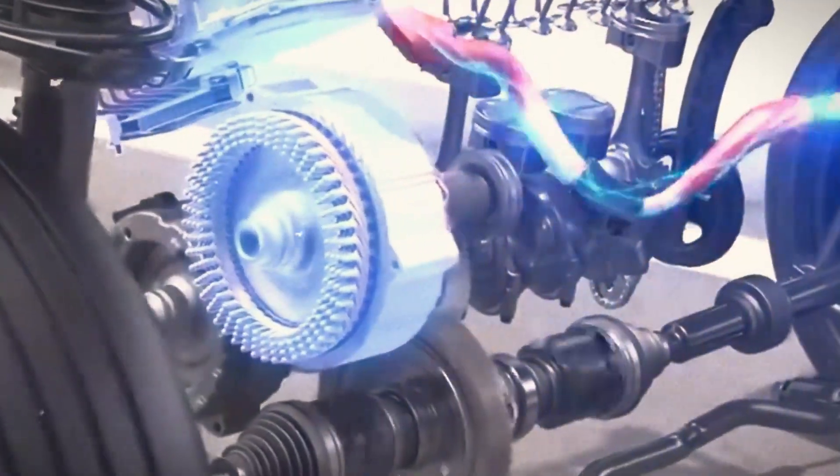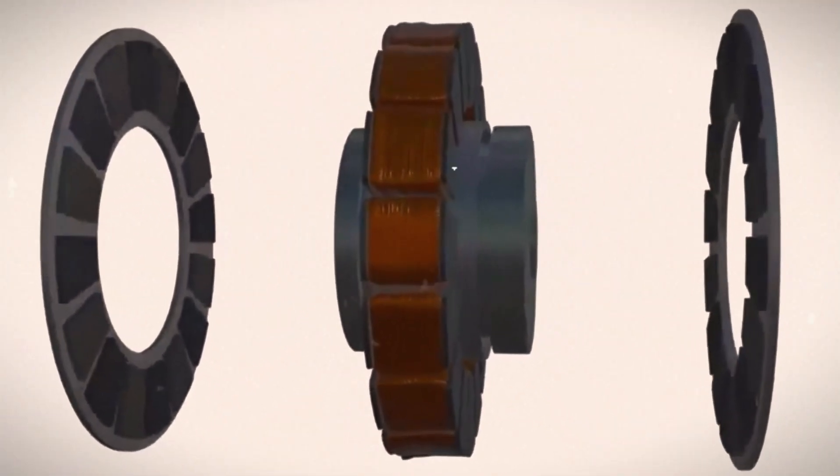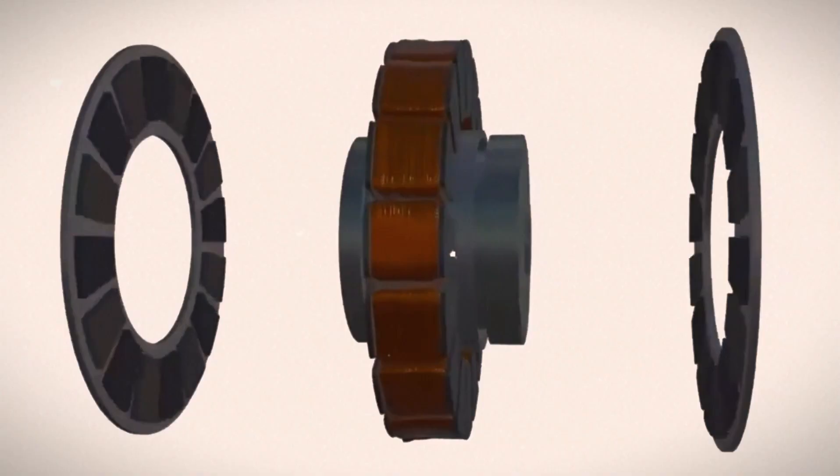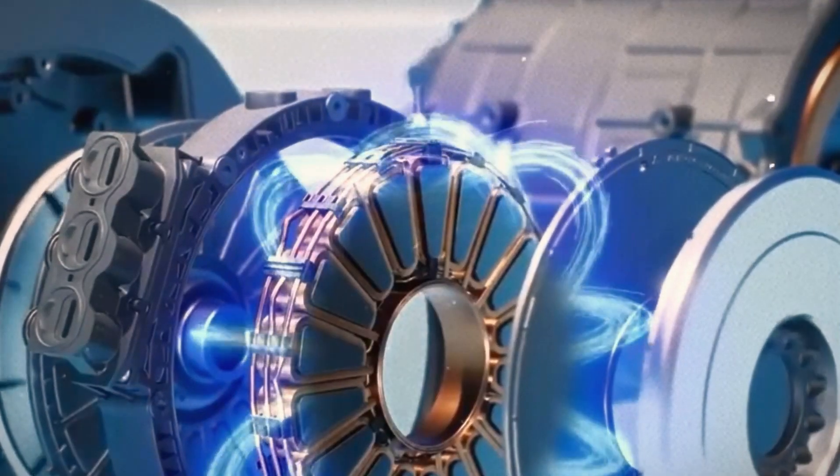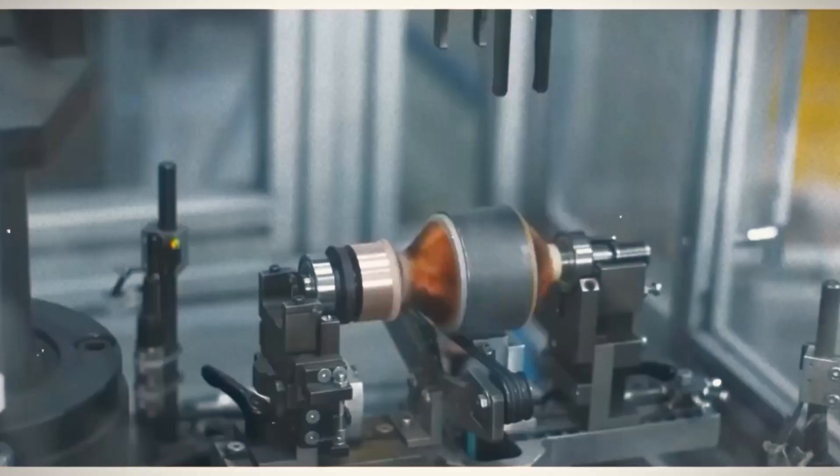Axial flux motors, on the other hand, are flatter and more compact, like a frisbee. But can they really pack a punch? Instead of the magnetic force traveling perpendicular to the axis, it runs parallel, allowing for a different shape.